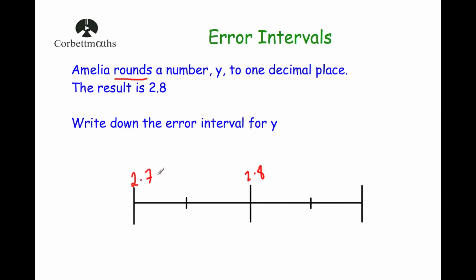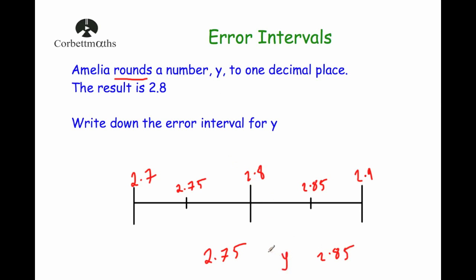We'd have 2.7 as the value below and 2.9 as the value above, with the midpoints 2.75 and 2.85. So 2.75 would be the lowest number that rounds up to 2.8, so we write 2.75 as the lowest possible number. And 2.85 — any number up to but not including that value would round down to 2.8, so we write 2.85 as the upper bound. So y can be any number greater than or equal to 2.75, but less than 2.85. Y can be 2.75 but it cannot be 2.85. That's the error interval for y.